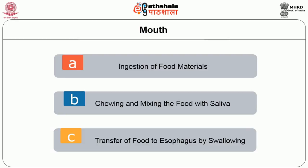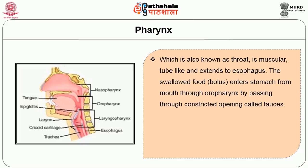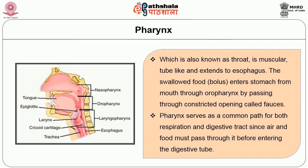Followed by the mouth is the pharynx, also known as the throat, which is a muscular tube-like organ extending to the esophagus. The swallowed food — the bolus — enters the stomach from the mouth through the oropharynx, passing through a constricted opening called the fauces. The pharynx serves as a common path for both respiration and the digestive tract, since air and food must pass through it before entering the digestive tube.